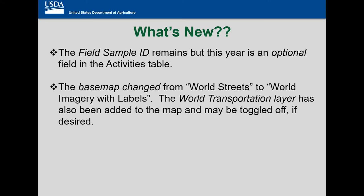Last year we were kind of confused as to what to do and so we were putting in 'none.' This year it's optional, so you don't have to worry about that too much — if it doesn't apply, you can just leave it. And then the base maps changed a little bit from World Streets to World Imagery. You may or may not notice or care, but I think it's pretty cool and I want to show you that.